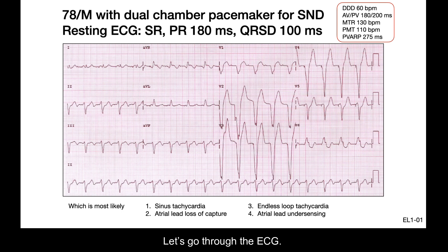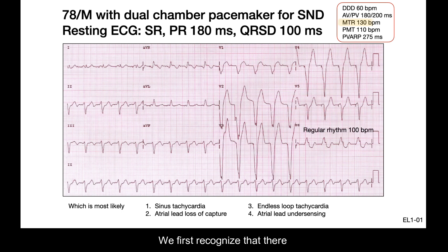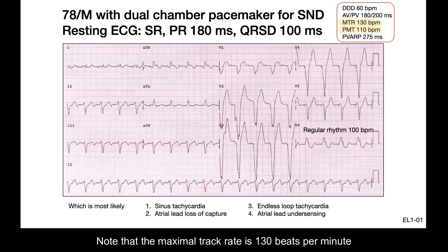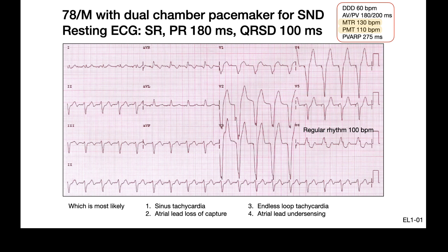Let's go through the ECG. We first recognize that there is a regular rhythm of 100 beats per minute. Note that the maximal track rate is 130 beats per minute with a PMT rate of 110 beats per minute.